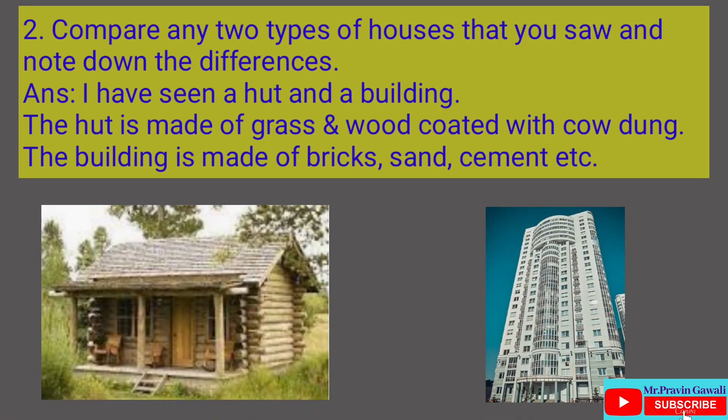Question number two: Compare any two types of houses that you saw and note down the differences. The answer is: I have seen a hut and a building. The hut is made of grass and wood coated with cow dung, and the building is made of bricks, sand, cement, etc.